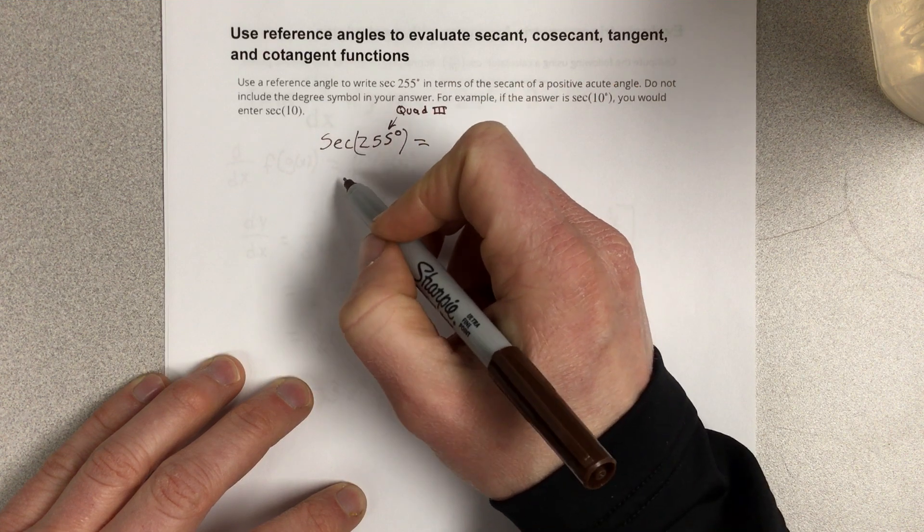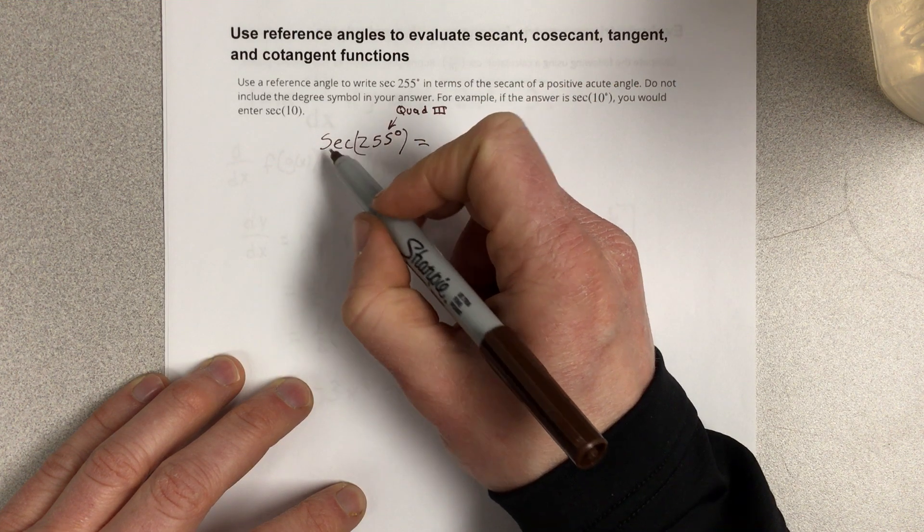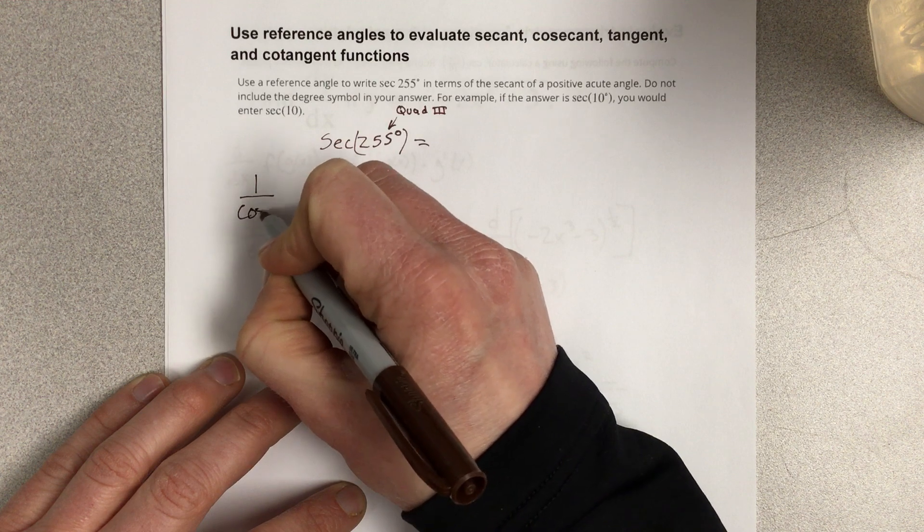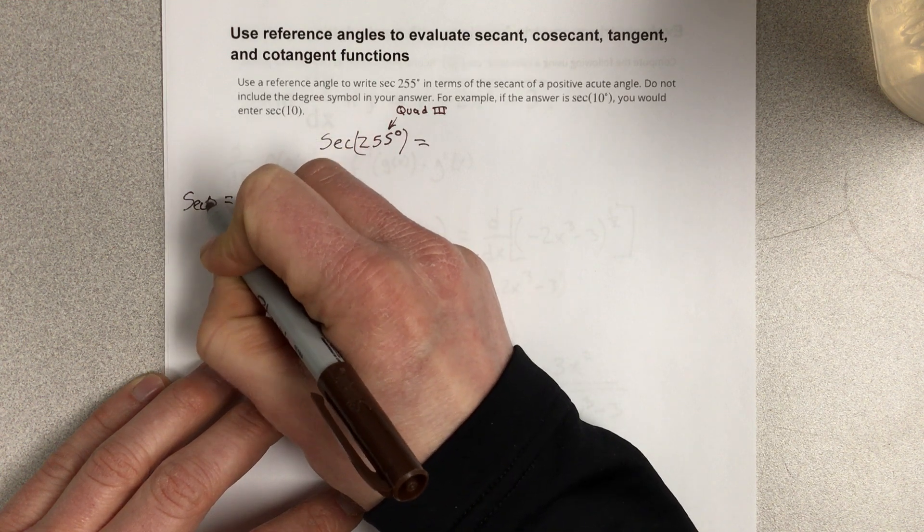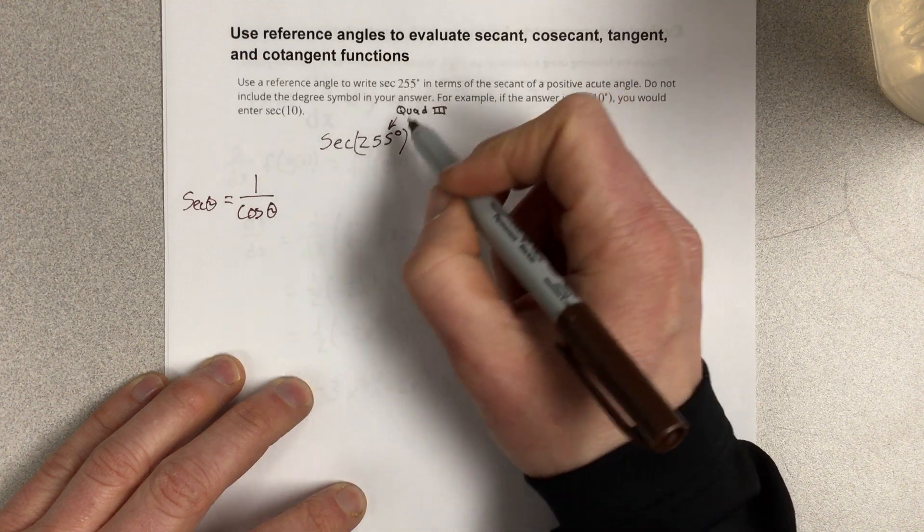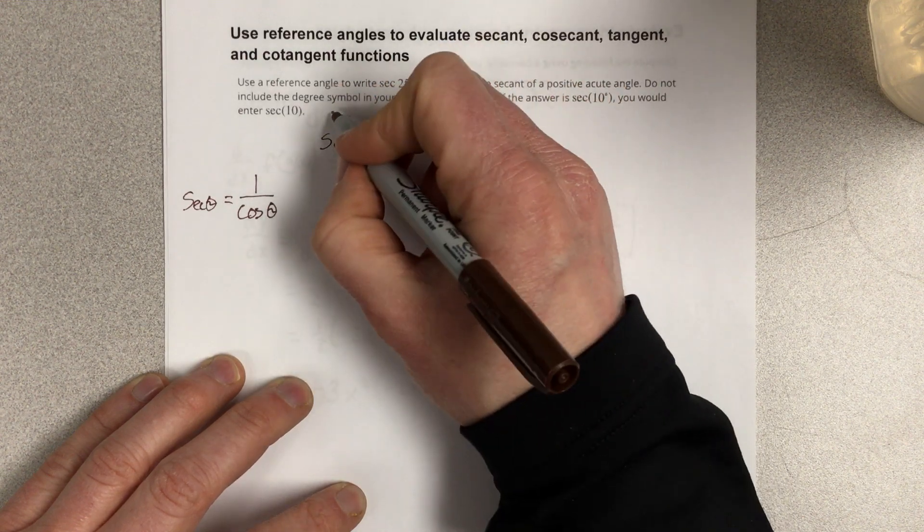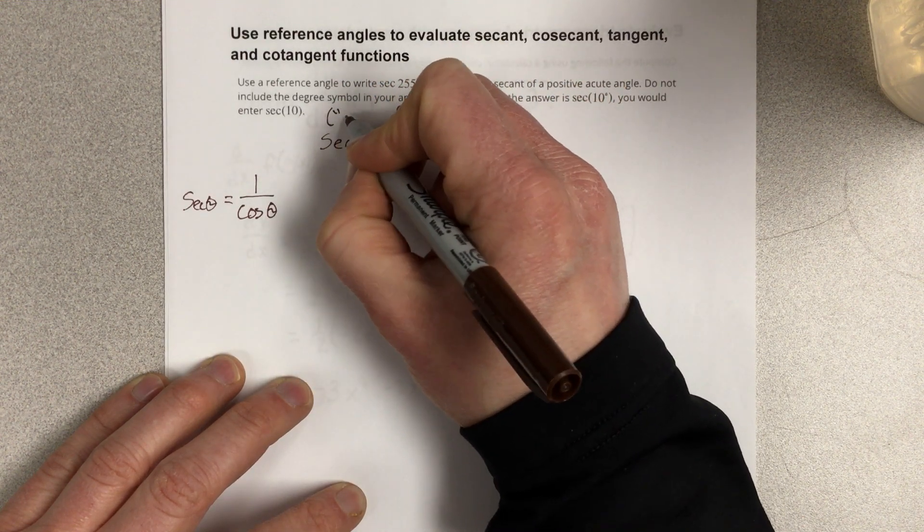Is secant positive or negative in quadrant 3? Secant, remember, is 1 over cosine theta. Cosine in quadrant 3 is actually negative, so that means that this piece here is negative.